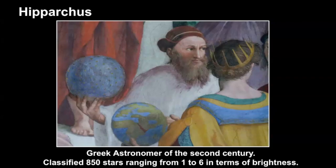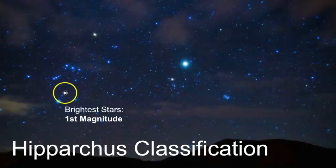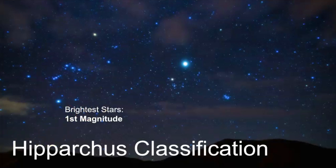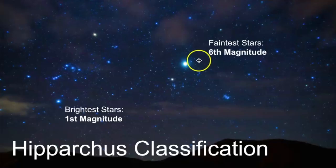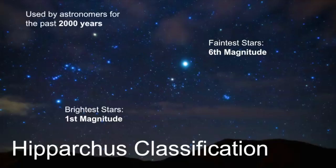So what did this look like for Hipparchus? You can see there are a range of star brightnesses. The brightest stars — like Rigel here in the constellation of Orion — would be a first magnitude star because it's very bright. The fainter stars, tiny little pinpoints that don't really stand out, those would be of sixth magnitude. And this system was used by astronomers for the past 2,000 plus years.